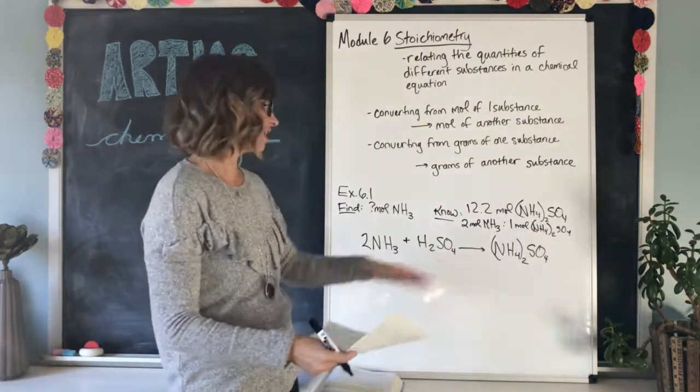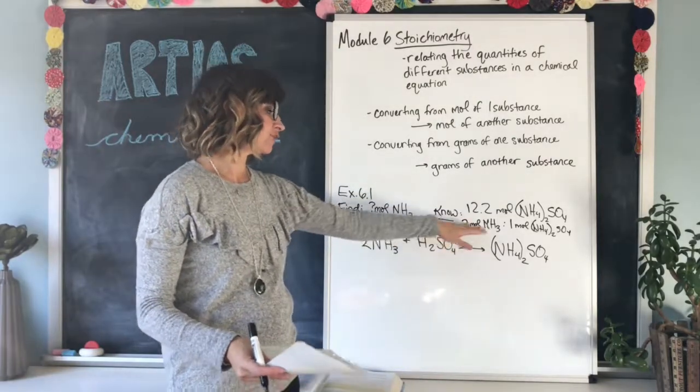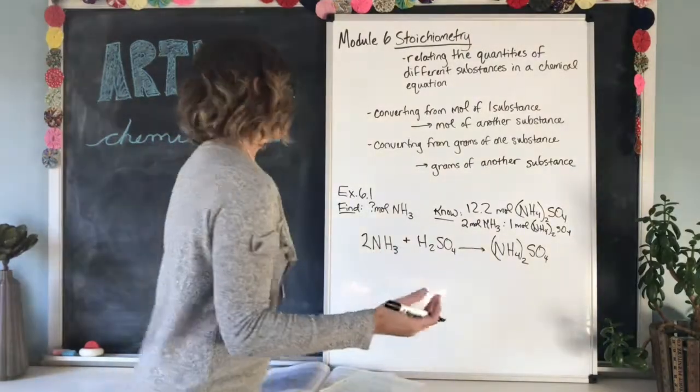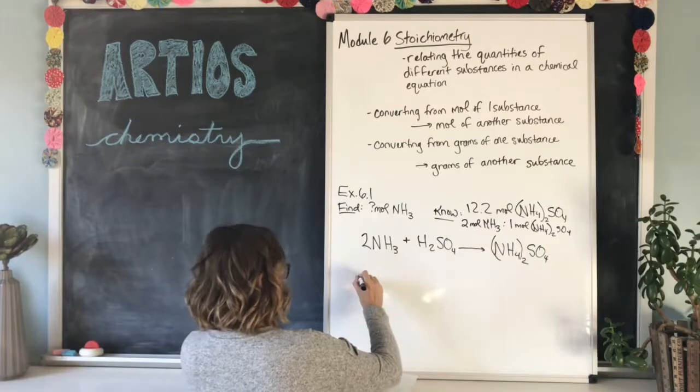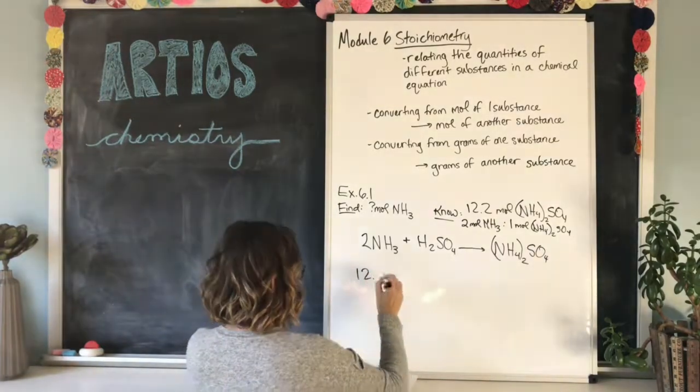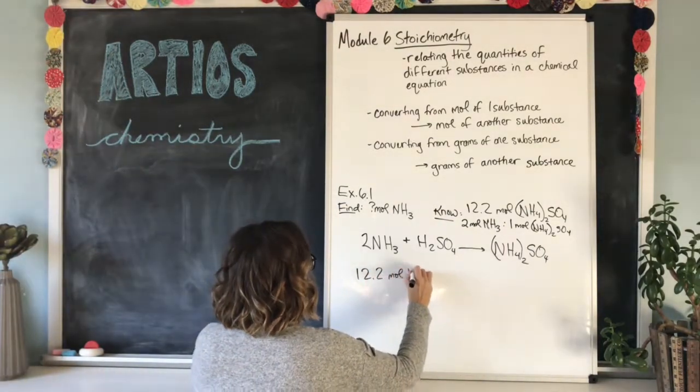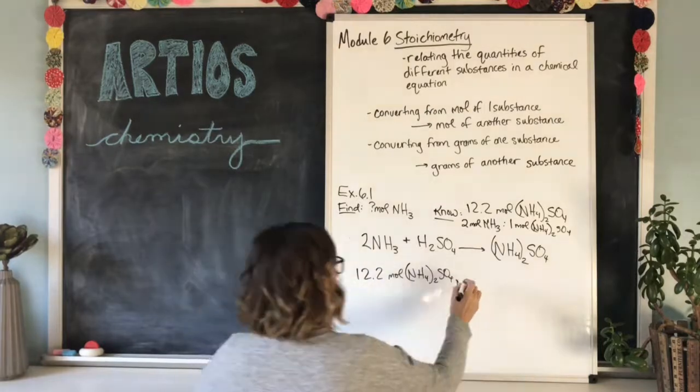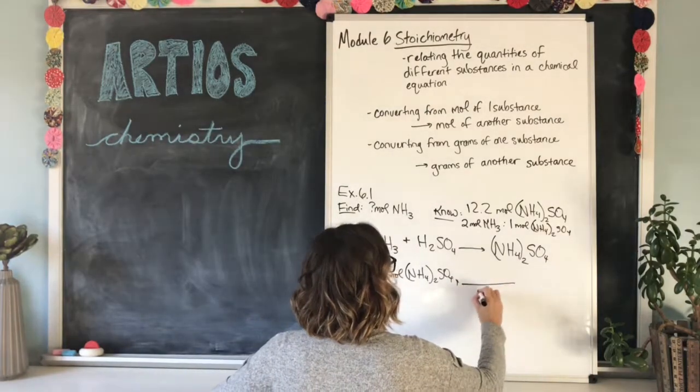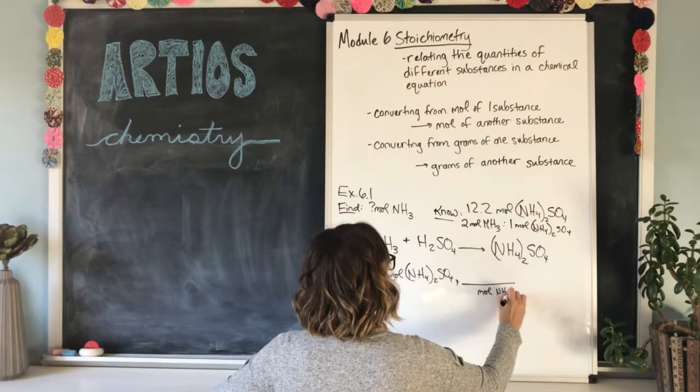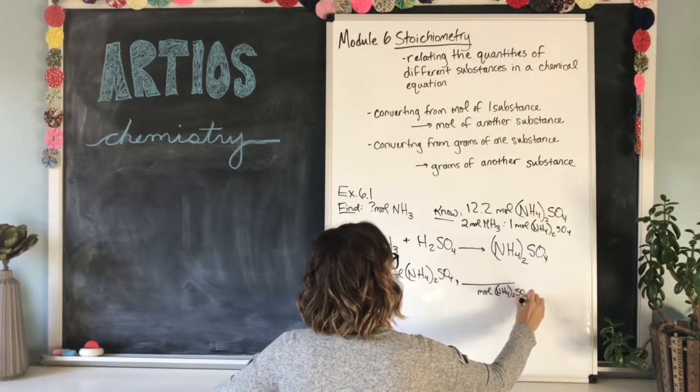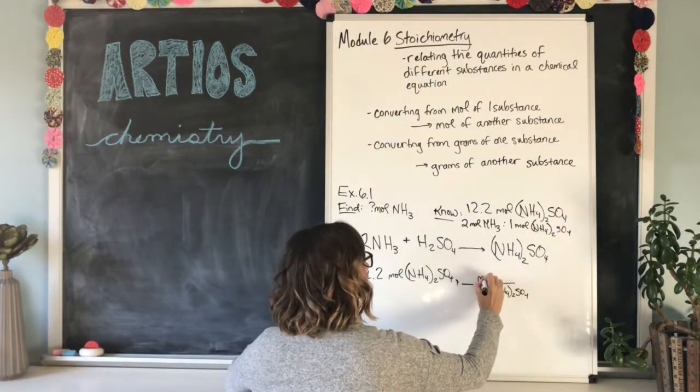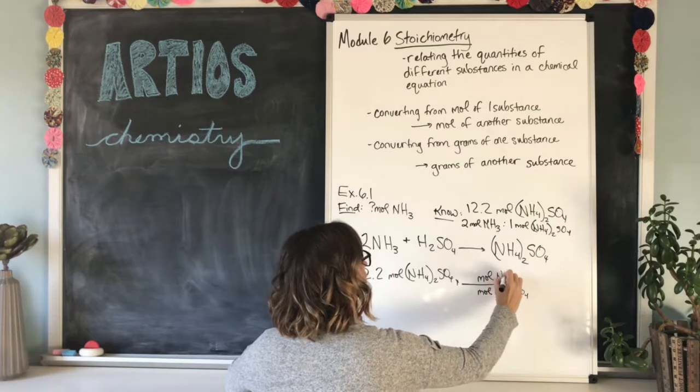So there are the two things that we know, how much we start with and the ratio between the reactant and the product. Now we can figure out the answer by using our factor label method. 12.2 moles of NH4, two SO4 times we want moles of that NH4, two SO4. Talk about a long chemical formula. We want that on the bottom and then we want the moles of what we're moving toward or looking for on the top, which is moles of NH3.